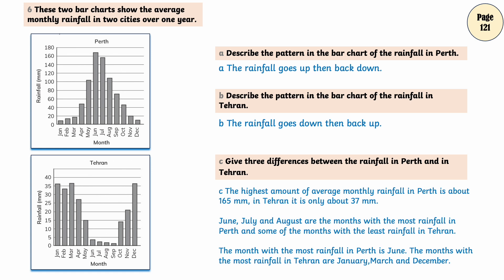June, July and August are the months with the most rainfall in Perth and some of the months with the least rainfall are in Tehran. The month with the most rainfall in Perth is June. The months with the most rainfall in Tehran are January, March and December.